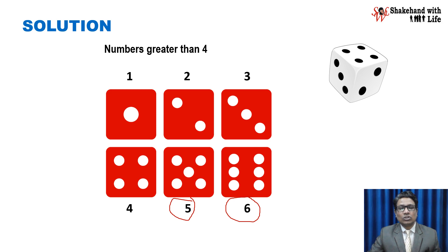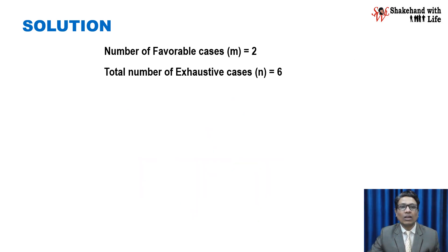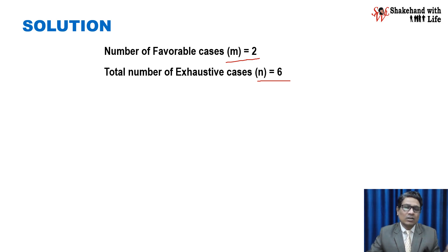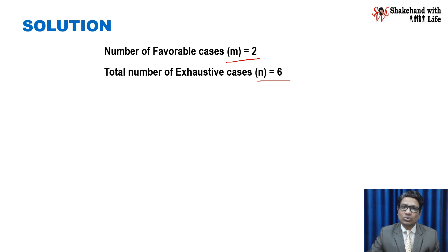5 and 6 are greater than 4. So how many favourable cases and how many exhaustive cases do we have? The number of favourable cases M equals 2, and the total number of exhaustive cases N equals 6. The total numbers on the dice are 6, and the favourable numbers — greater than 4 — are 2 only: 5 and 6.